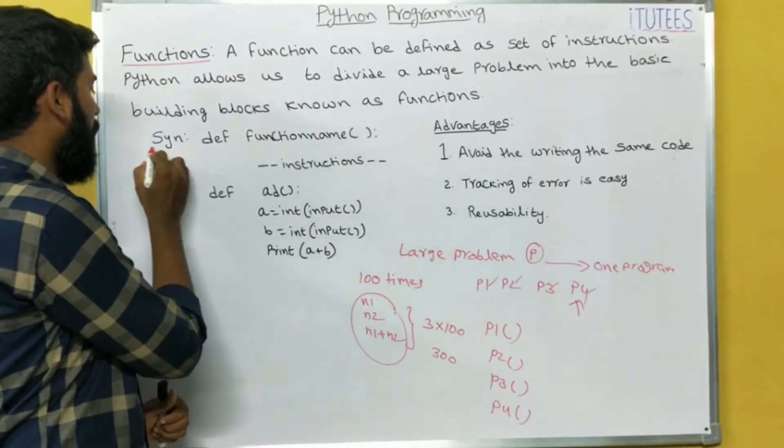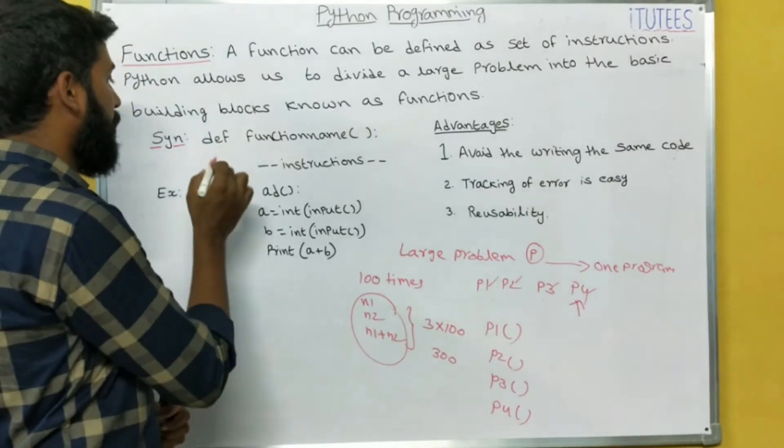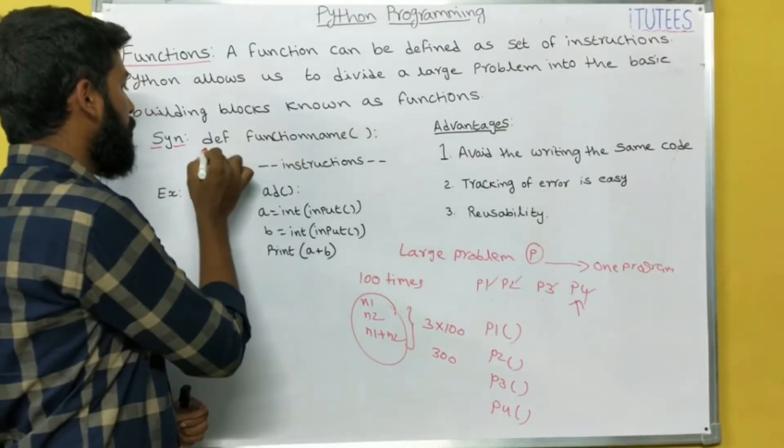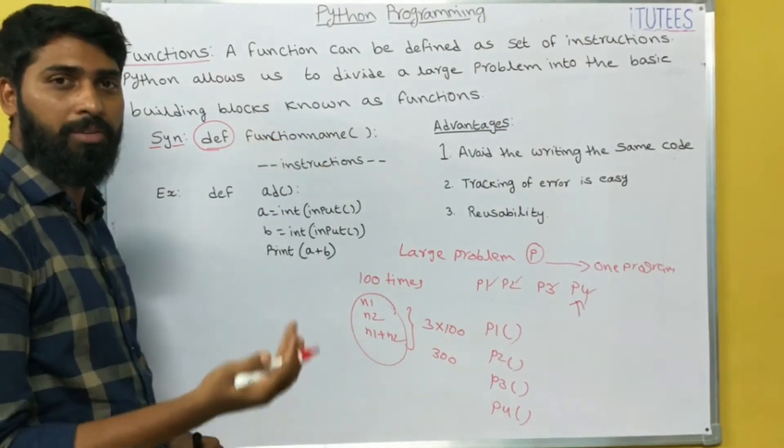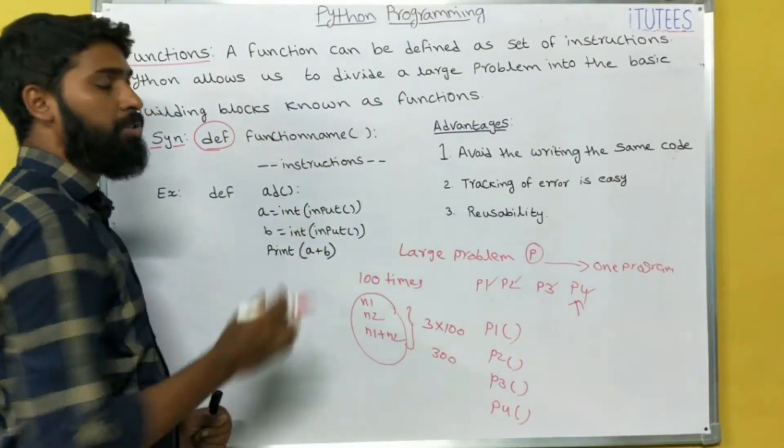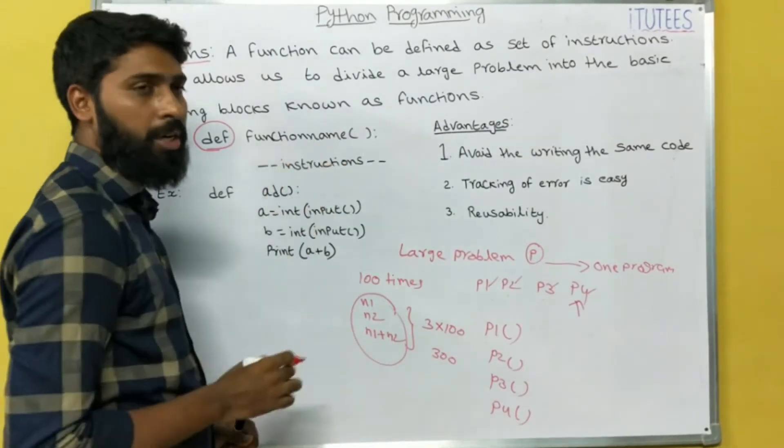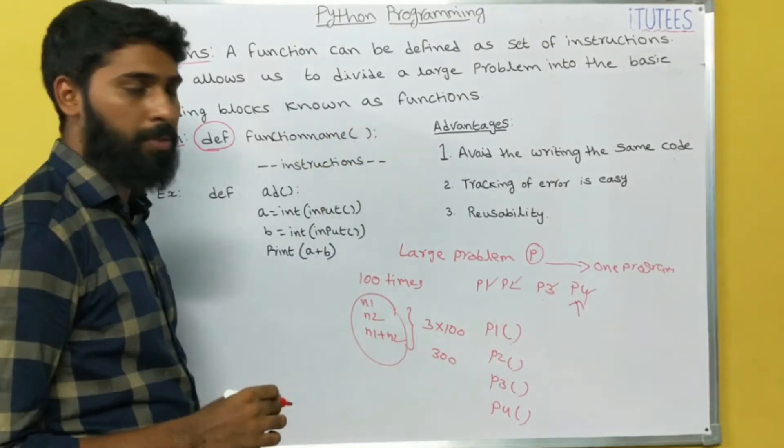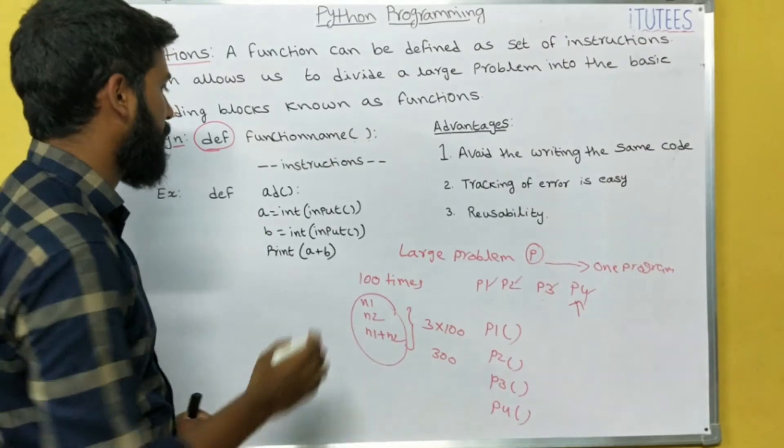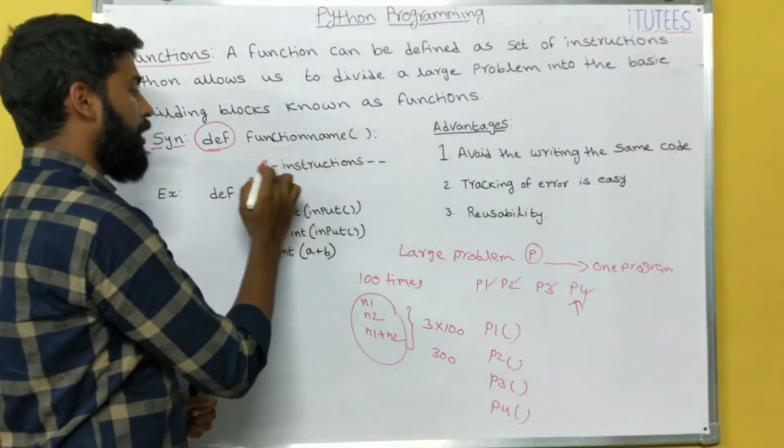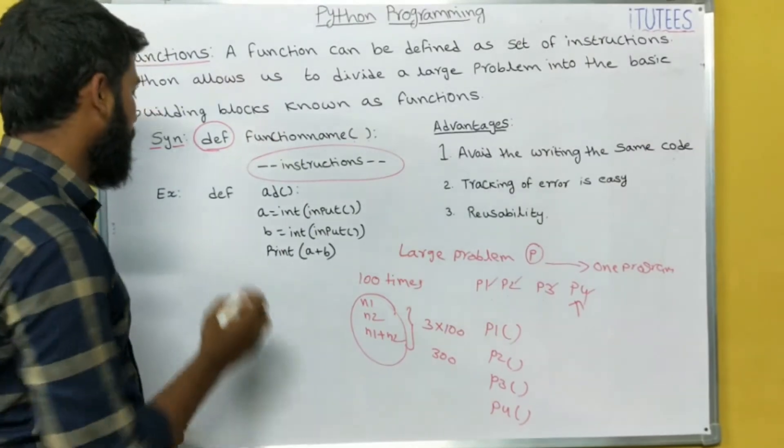Now we can see how to define a function in Python. To define a function in Python, we can use the keyword def, space, function name. We can give the function name. So for this you can follow the identifier rules. Open bracket and closing bracket, and you can use colon for indentation purpose. After that you can write the function block here.